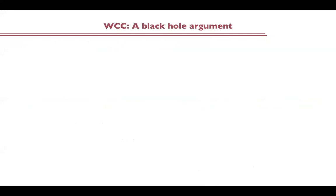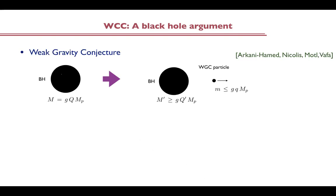Let me start applying these ideas about discrete gauge symmetries to propose this weak coupling conjecture. I will start with a heuristic black hole argument. Let me review how one derives the weak gravity conjecture using black holes. One can start with some extremal black hole and propose that it should decay and become sub-extremal. That means the theory should contain some super-extremal particle where the mass is smaller than the charge in suitable units — this is the weak gravity conjecture particle. In the supersymmetric case, equality holds, as was proposed by Ooguri and Vafa.